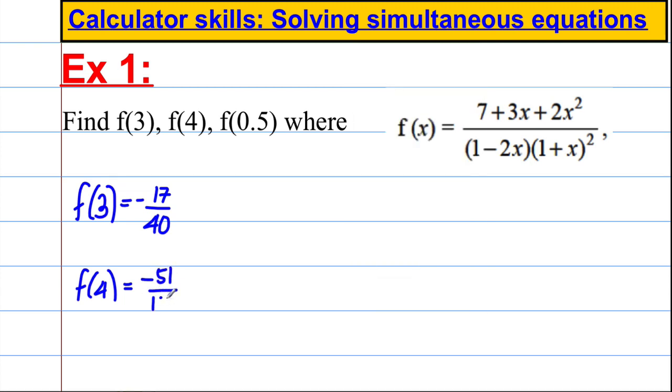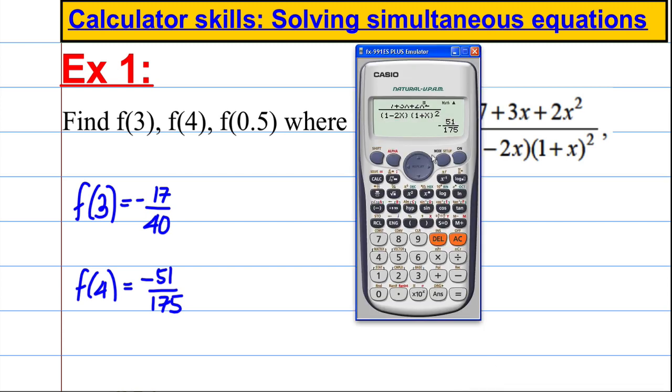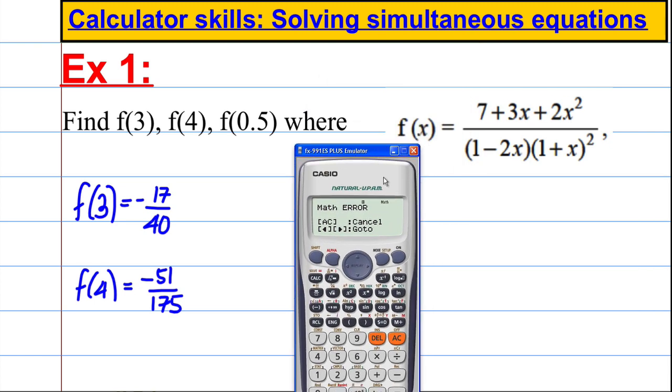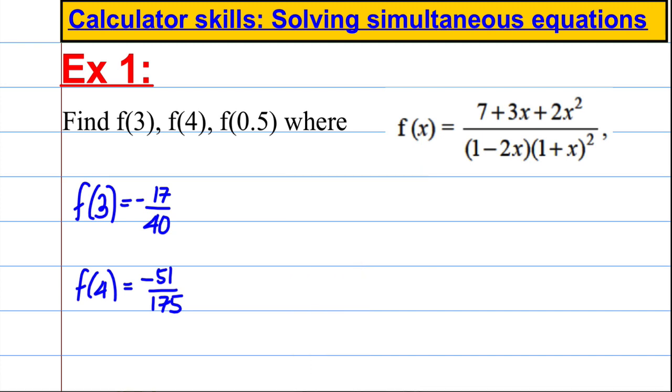And lastly, we can even put fractions in. We can calculate a half. But actually, if you look, if we put in 0.5, the denominator here would actually equal zero, and we can't divide by zero. So instead of 0.5, let's change that. Let's instead work out f(0.4).